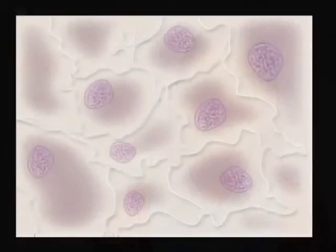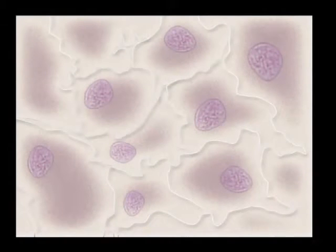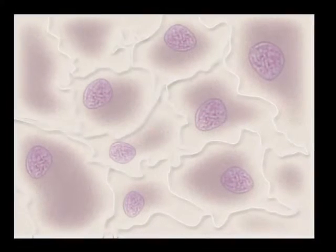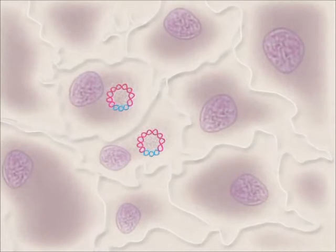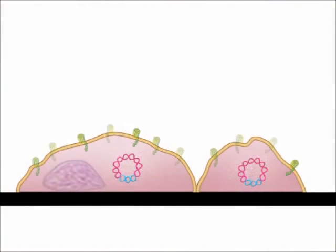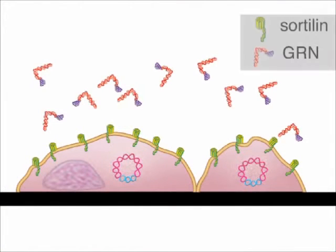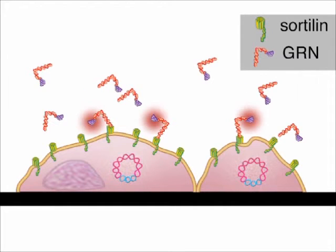We wondered about the identity of the protein that mediates progranulin binding in neurons. We performed expression cloning by transferring a CDA library pools into COS7 cells and screening for clones that would enable high affinity cell surface progranulin binding. We identified only one clone from the screen. This CDA clone encodes sortilin, a transmembrane protein of the VPS10 family.